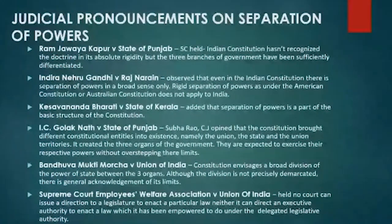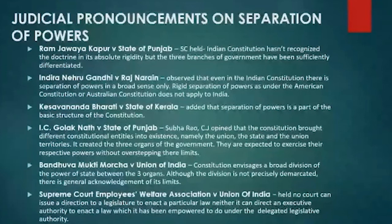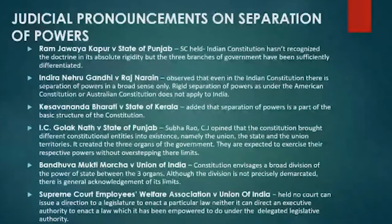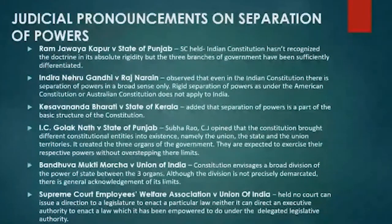In I.C. Golak Nath versus State of Punjab, Justice Subba Rao opined that the constitution brought different constitutional entities into existence — the union, the states, and union territories — and created three organs of government expected to exercise their respective powers without overstepping their limits. In Bandhua Mukti Morcha versus Union of India, the constitution was seen to envision a broad division of the power of state between three organs, with a general acknowledgement of its limits. In Supreme Court Employees' Welfare Association versus Union of India, it was held that no court can issue a direction to the legislature to enact a particular law, nor direct an executive authority to enact a law under delegated legislative authority.